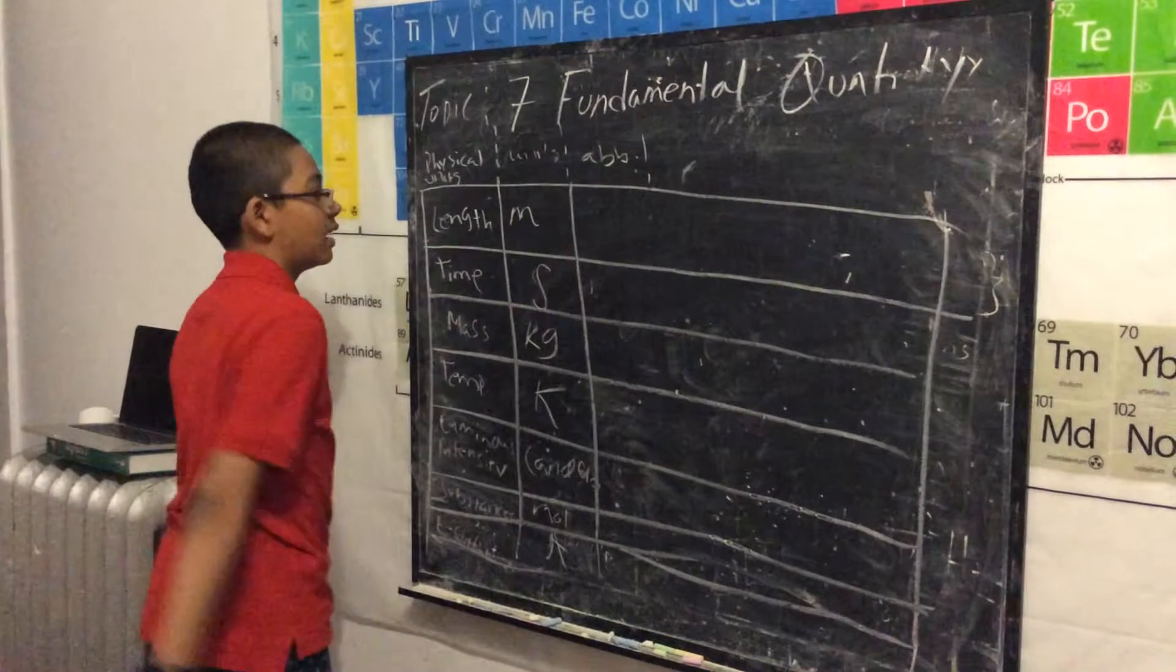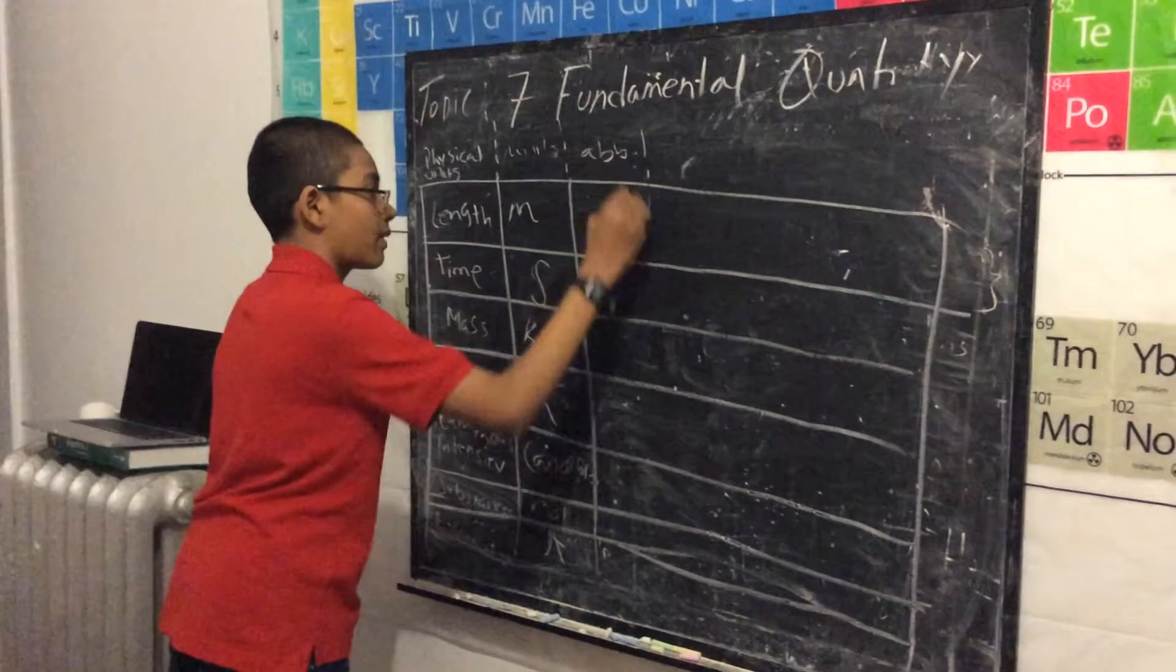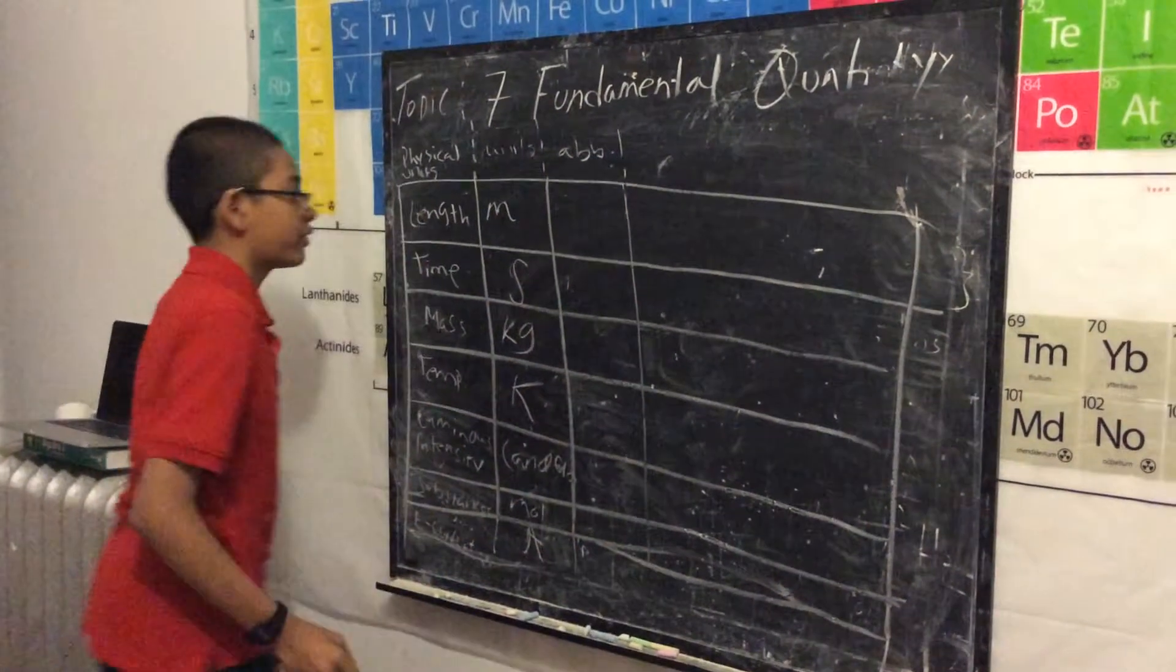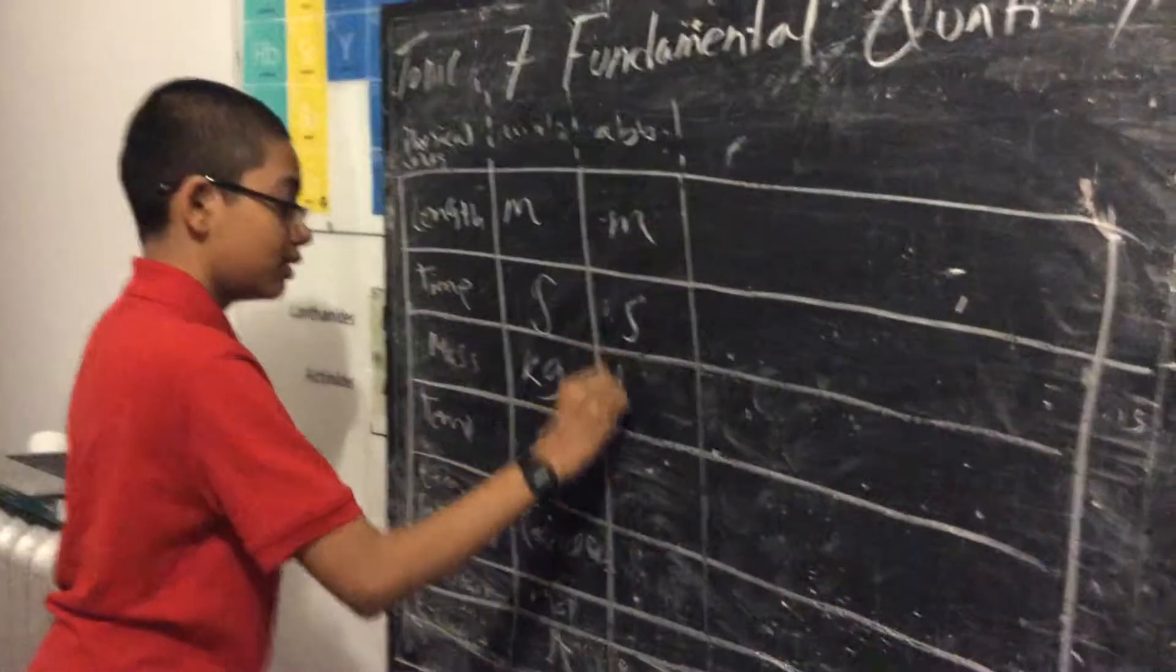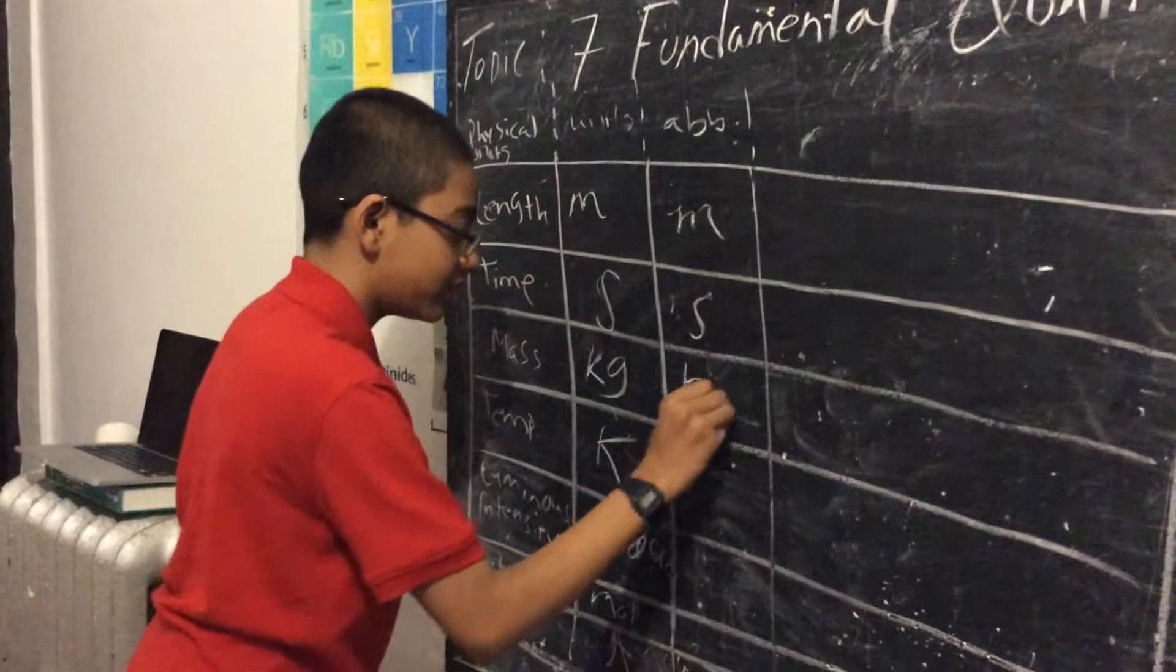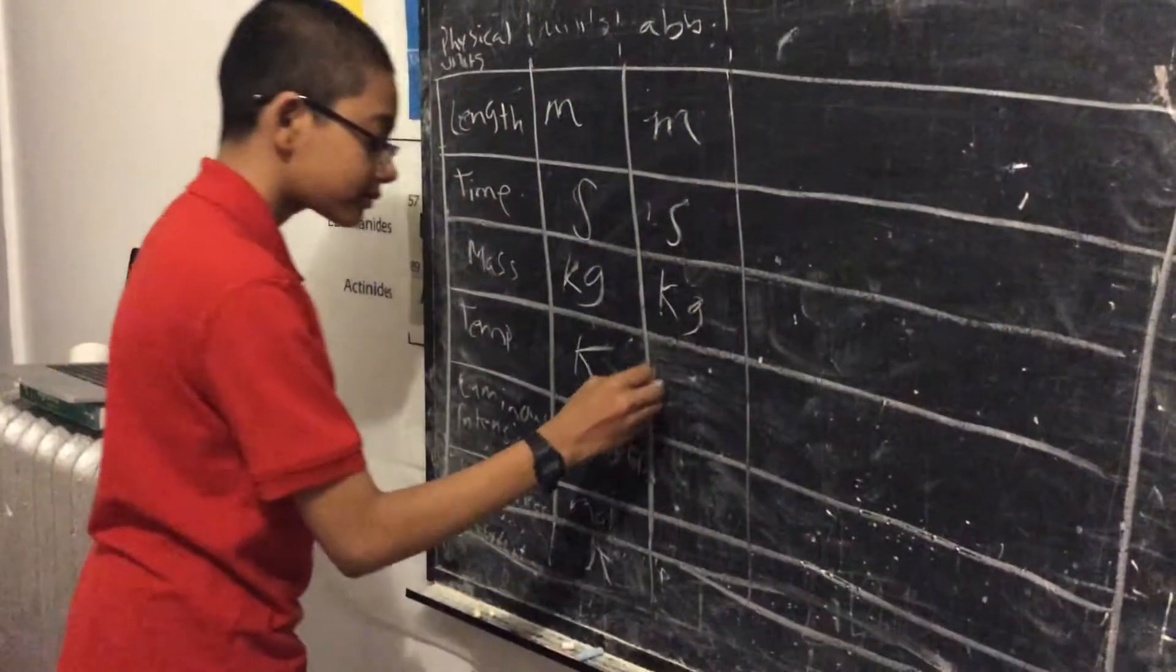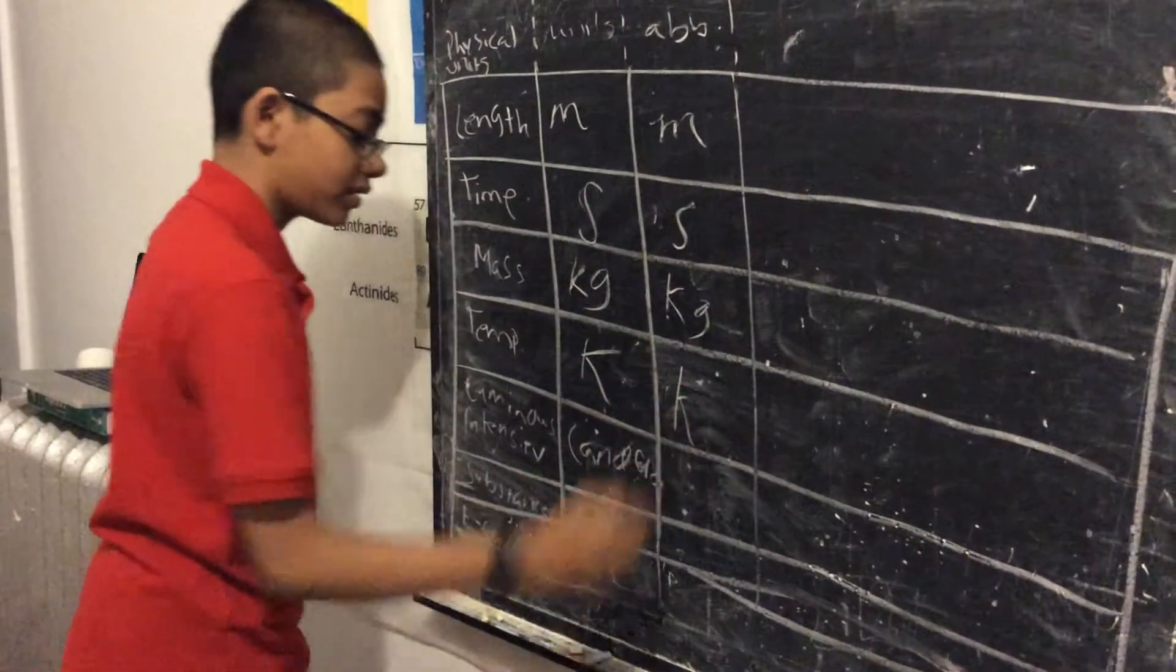So let's start off writing the abbreviations for this. For length, for the unit of length we just write m for meter, s for second, kg for kilograms, K for Kelvin.